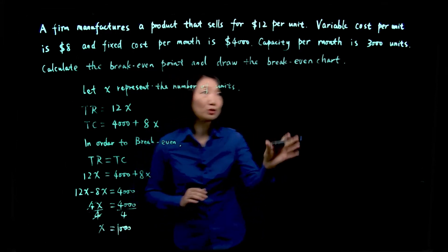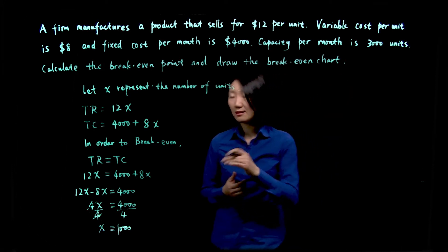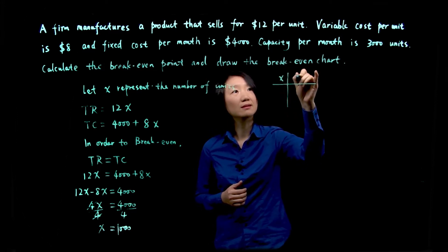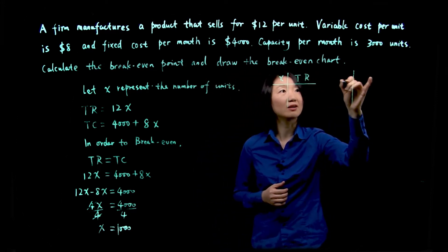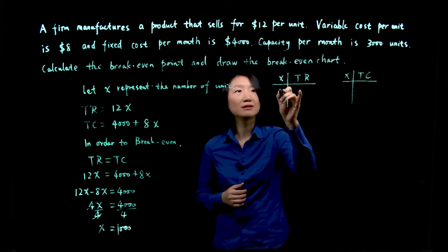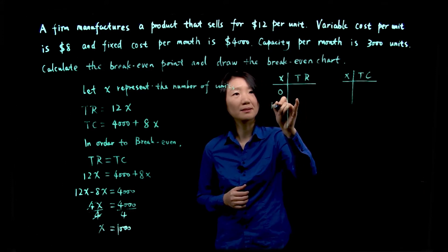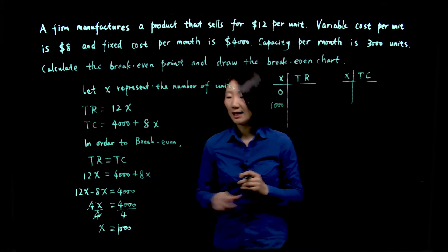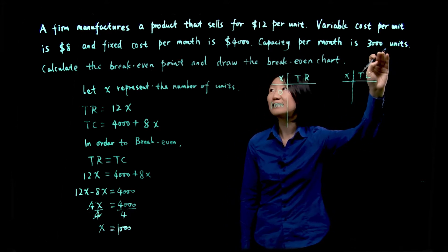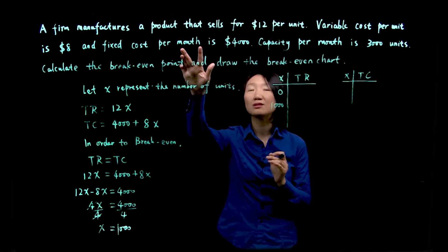Now before we draw the break-even chart, we'll have to do a little bit of prep work. So let's select some points for our total revenue and total cost calculation. So first, let's say zero, we'll pick the break-even point, and we'll also pick the capacity point, 3,000 units. That's the maximum this firm can produce every time period, which is per month.